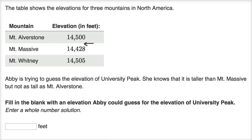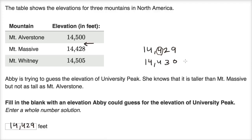One possibility is we'll just add one to Mount Massive, so one possibility is 14,429. That would be taller than Mount Massive but not as tall as Mount Alverstone — even though it has more ones than Mount Massive, everything else is the same, and it has fewer hundreds than Mount Alverstone. We could have also written 14,430, and we could have kept going all the way until 14,499. Any of these whole number solutions would have been acceptable answers.